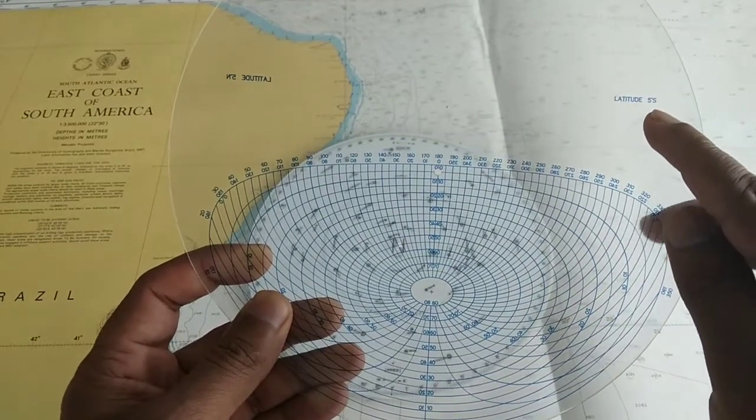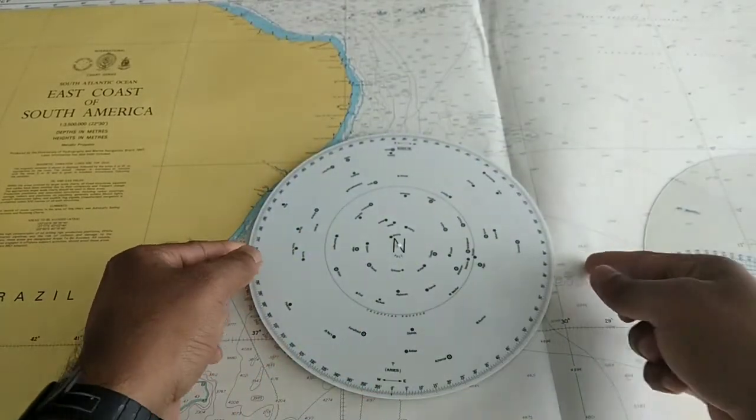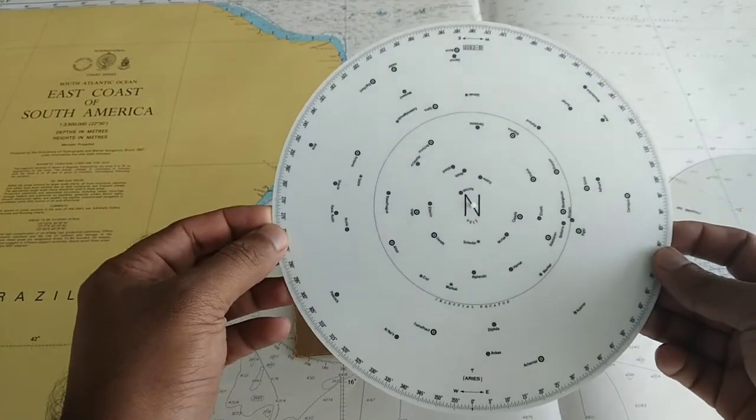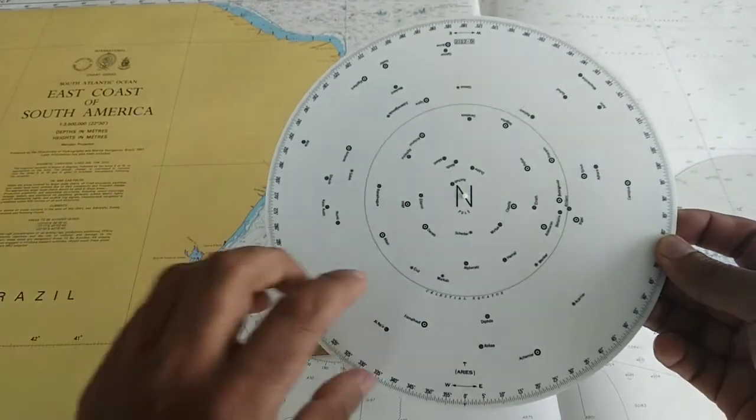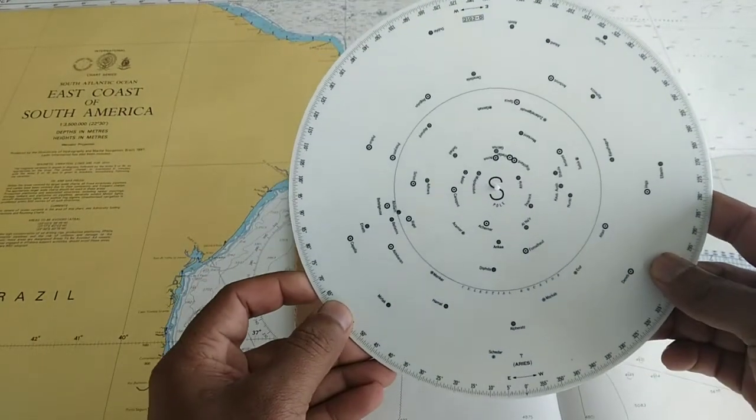On the star chart also we have two sides: northern side and southern side.